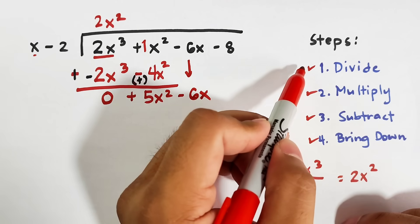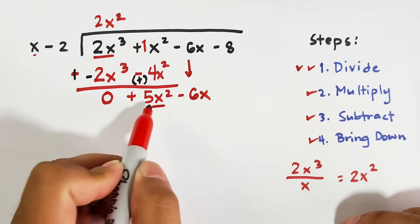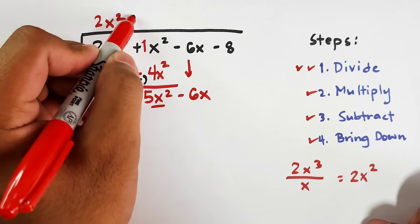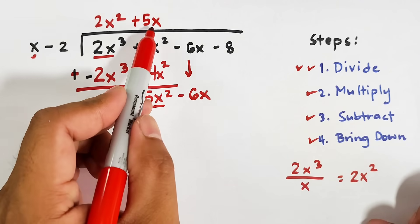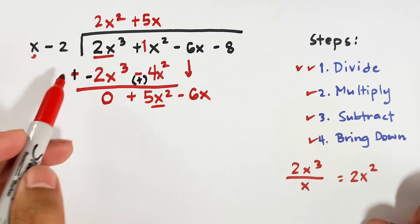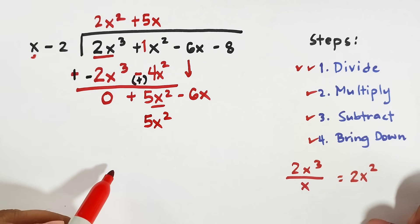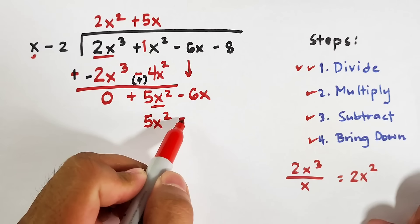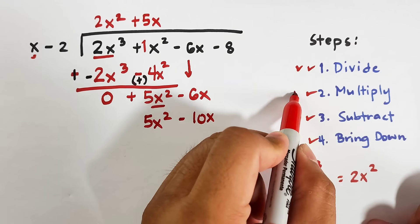We go back to divide. We divide the first term 5x squared by the first term of the divisor x, which gives plus 5x. Then we multiply 5x by the entire divisor: 5x times x is 5x squared, and 5x times negative 2 is negative 10x.